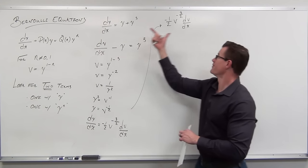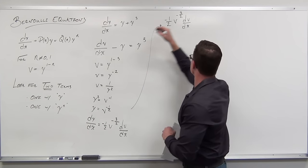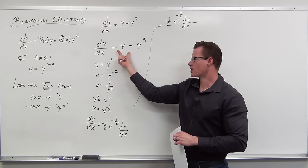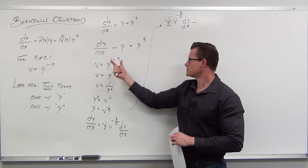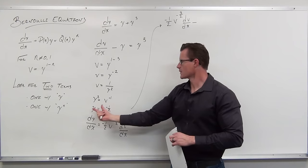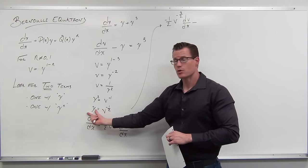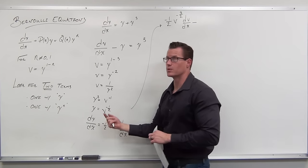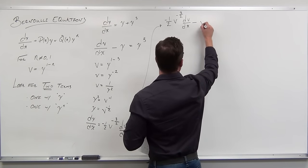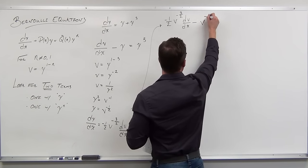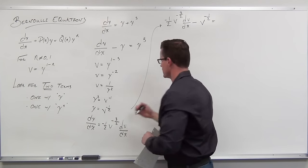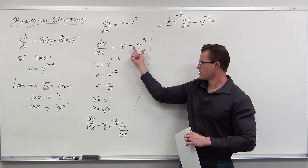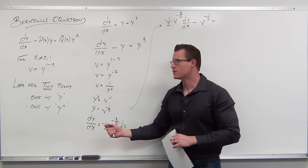So dy/dx, I'm going to replace it with negative one half v to the negative three halves dv/dx. Then we have minus y — I'm not going to have y anymore. I've solved for y: y equals v to the negative one half. So I replace this y with v to the negative one half, and also replace the next y instance with v to the negative one half as well.